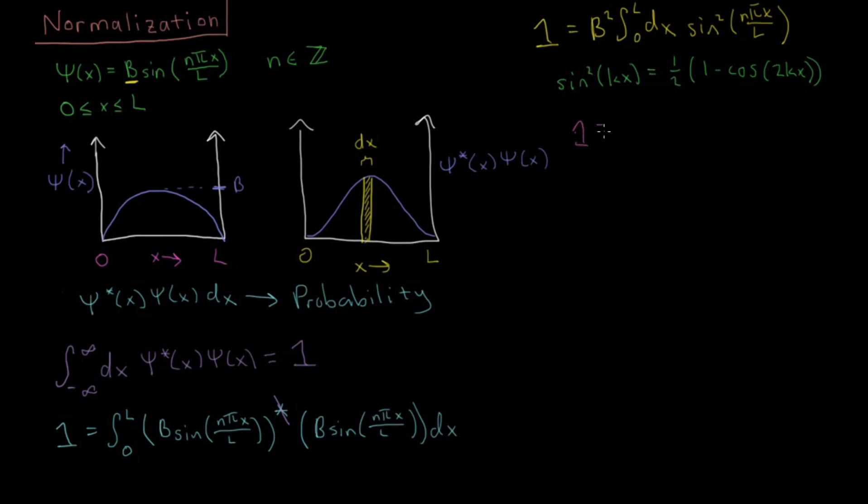We'll substitute that in where we have one equals b squared. Now we have b squared over two because I'm going to pull out this one half. So one equals b squared over two, and I go from zero to L dx, one minus cosine, now we have 2n pi x over L.